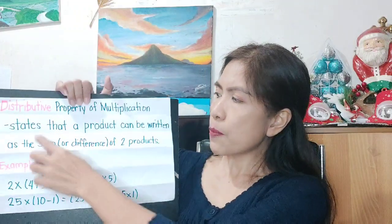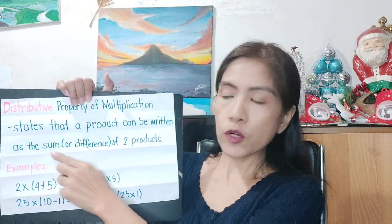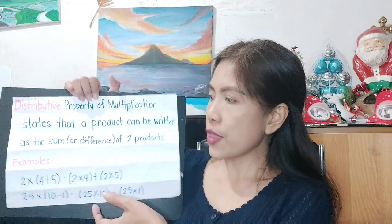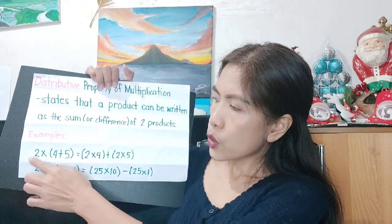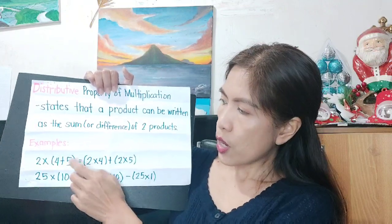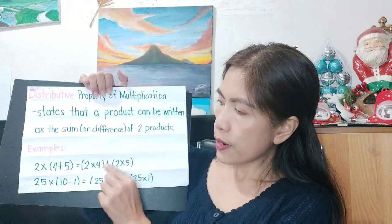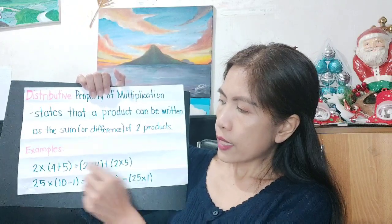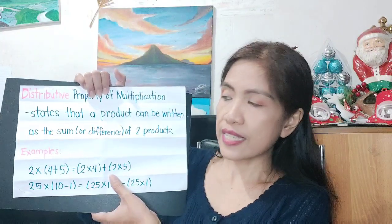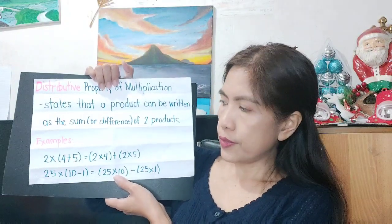The last one is the distributive property of multiplication. It states that the product can be written as the sum or difference of two products — you just distribute the numbers. For example, 2 times (4 plus 5): distribute the 2 to 4 and to 5, giving us 2 times 4 plus 2 times 5. They will still give us the same answer.